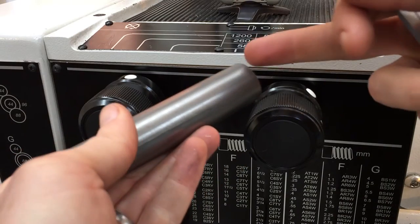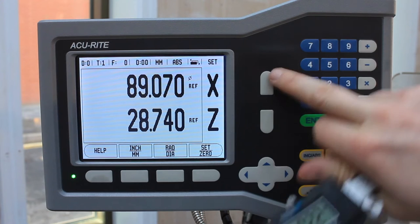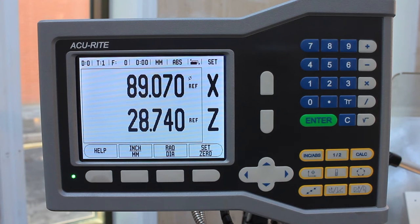What we're going to do is turn this diameter down, set the datums using these two buttons here, and then we'll turn a taper so we can use the taper calculator.